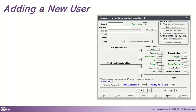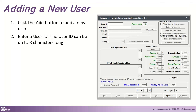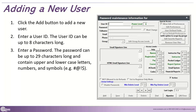So how do we add a new user? Step one is going to be to click the Add button, just like if you were to add a course or a name record. Then you can enter a user ID — you get eight characters for this. What I typically see is someone's first initial and last name, or whatever naming convention you already have. Stick with that. And then a password — you can have a 29-character long password now, with uppercase, lowercase, numbers, and symbols.